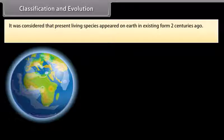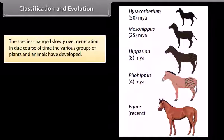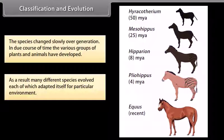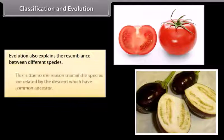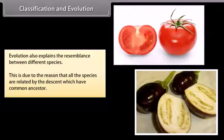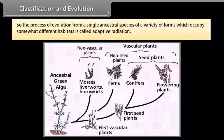Classification and Evolution: It was considered that present living species appeared on earth in existing form two centuries ago. We all know that the origin and diversity in species have been explained on the basis of evolution. The species changed slowly over generations. In due course of time, the various groups of plants and animals have developed. As a result, many different species evolved, each of which adapted itself for a particular environment. Evolution also explains the resemblance between different species, due to the reason that all these species are related by descent from a common ancestor. So the process of evolution from a single ancestral species into a variety of forms which occupy somewhat different habitats is called adaptive radiation.